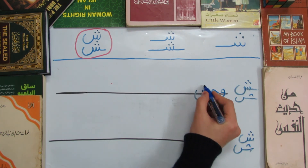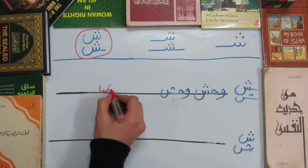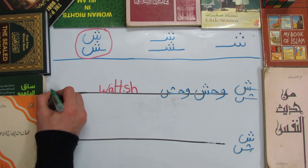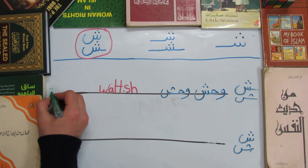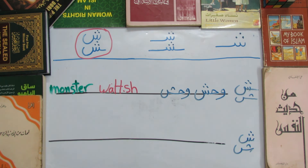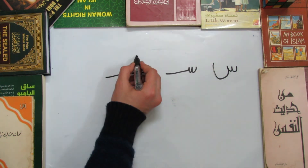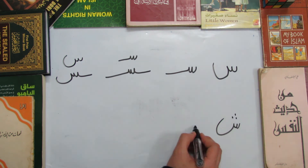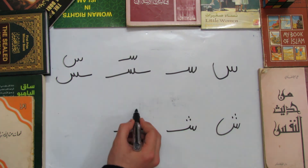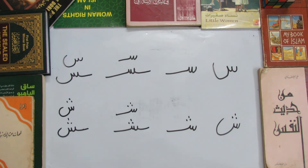For sheen at the end of the word, we have Wahsh, meaning 'monster,' and we also have Arsh, meaning 'throne.' That's it — let's make a quick review to revise all the shapes and positions of seen and sheen. This is everything for today; I hope you found it beneficial. Don't forget to like, share, and subscribe. See you soon — goodbye! La liqaa.